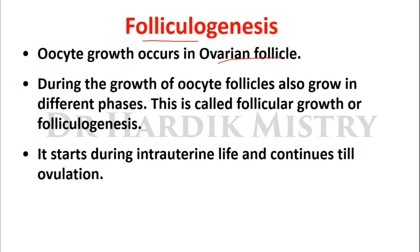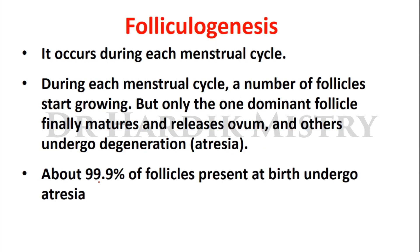Now regarding folliculogenesis: oocyte growth occurs in the ovarian follicle. During the growth of the oocyte, follicles also grow in different phases - this is called follicular growth or folliculogenesis. It starts during intrauterine life and continues till ovulation, occurring during each menstrual cycle. During each menstrual cycle a number of follicles start growing, but only one dominant follicle finally matures and releases the ovum; the others undergo degeneration known as atresia. About 99.9% of follicles present at birth undergo atresia.